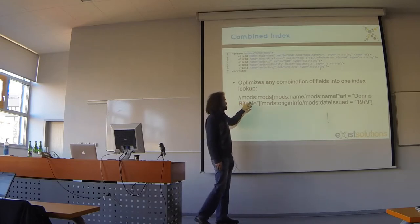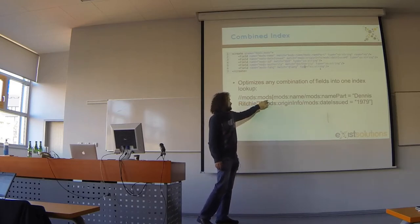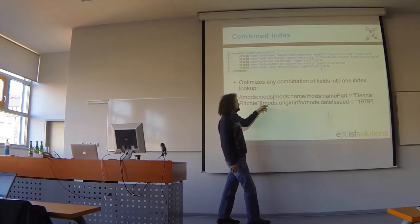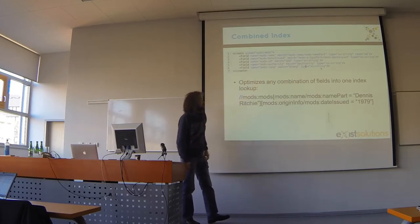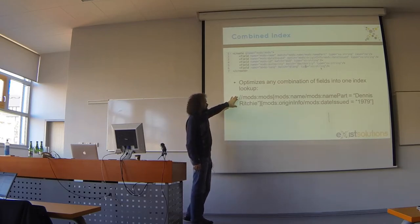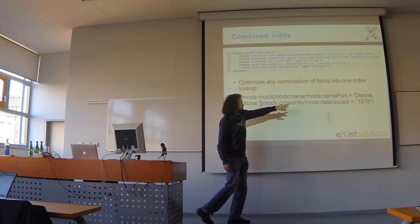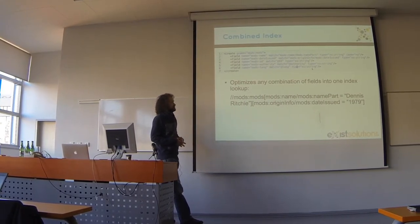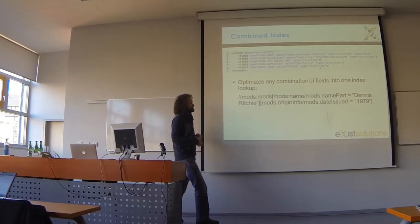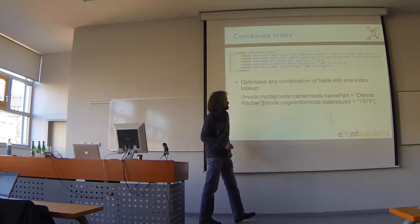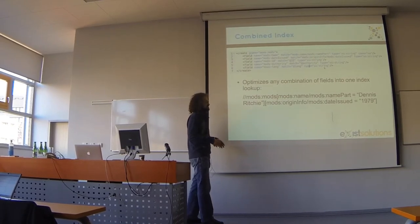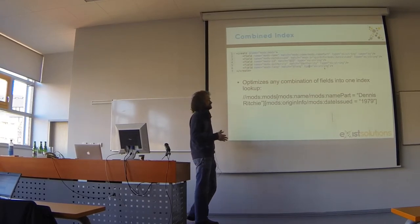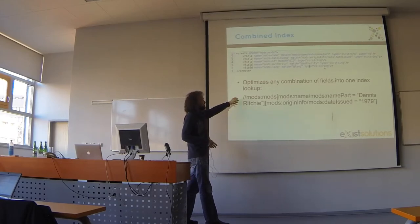What it will do is optimize every XPath expression which starts with this root element and then queries or filters parts of it which have fields defined in the configuration. So this more complex lookup here, which searches for books written by Dennis Ritchie in 1979, is actually replaced on the fly in the background with one single index lookup. Instead of searching for date issued equals 1979 and name part equals Dennis Ritchie separately, we combine those two lookups into actually one, which we send to the index and it responds in very quick time. The whole expression is rewritten.